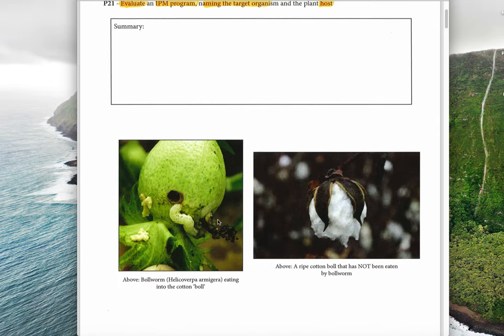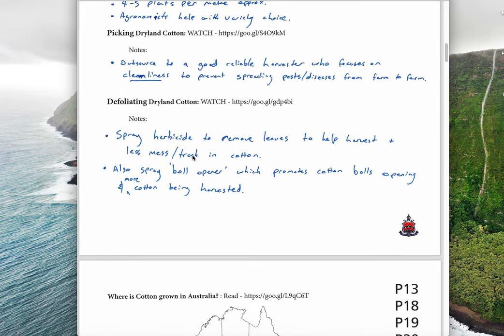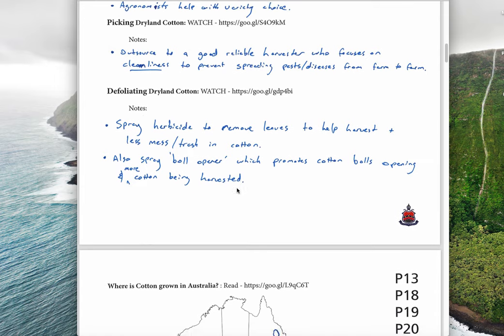When you're spraying that herbicide, you could spray another chemical which is a boll opener. If you spray a boll opener, it will split open the boll or help the boll to split open. So you've got a higher yield of cotton if you spray that before being harvested.